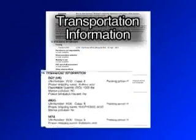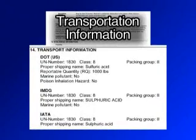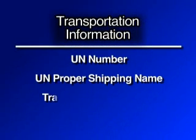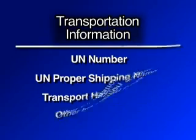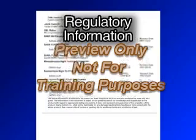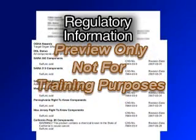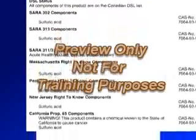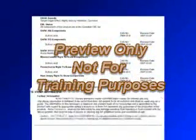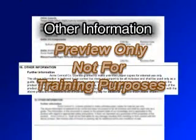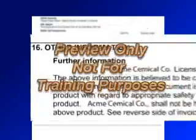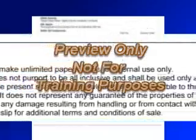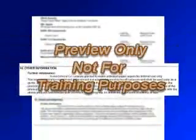Section 14: Transportation Information. Another non-mandatory section that includes such information as the UN number, UN proper shipping name, transport hazard class, and other information. Section 15: Regulatory Information. The final non-mandatory section provides information on safety, health, and environmental regulations specific for the product in question. Section 16: Other Information, including Date of Preparation or Last Revision. This last section will contain any additional information not already listed, as well as the date of preparation of the SDS or the last change to it.